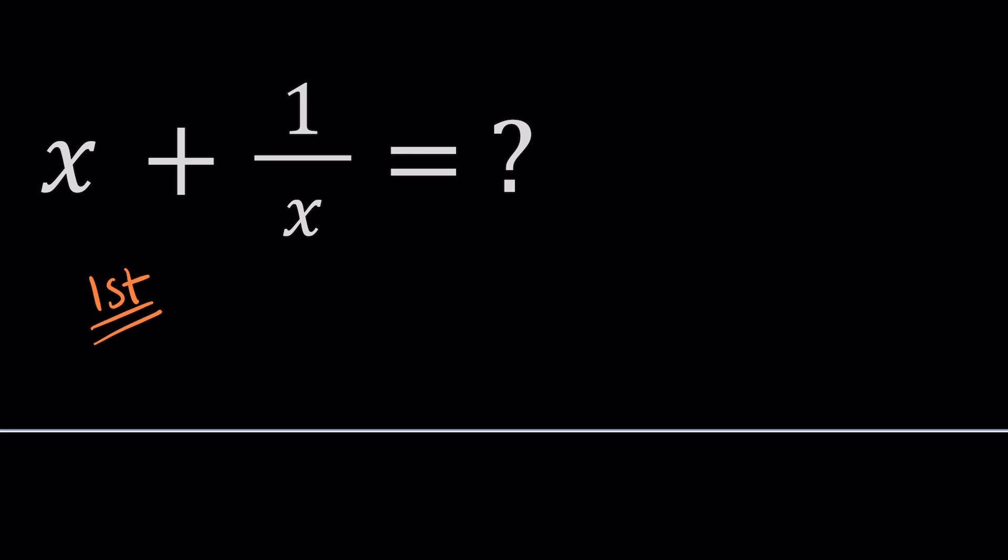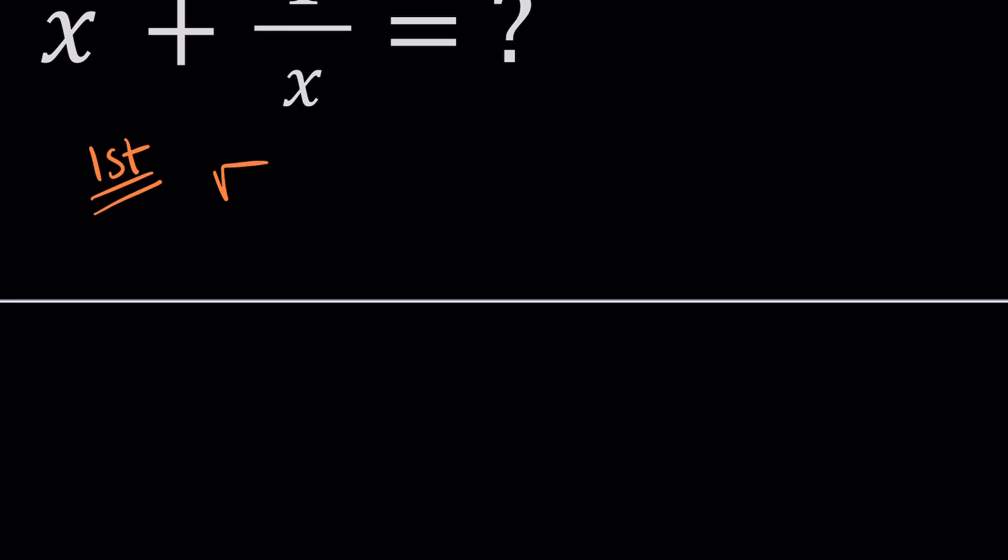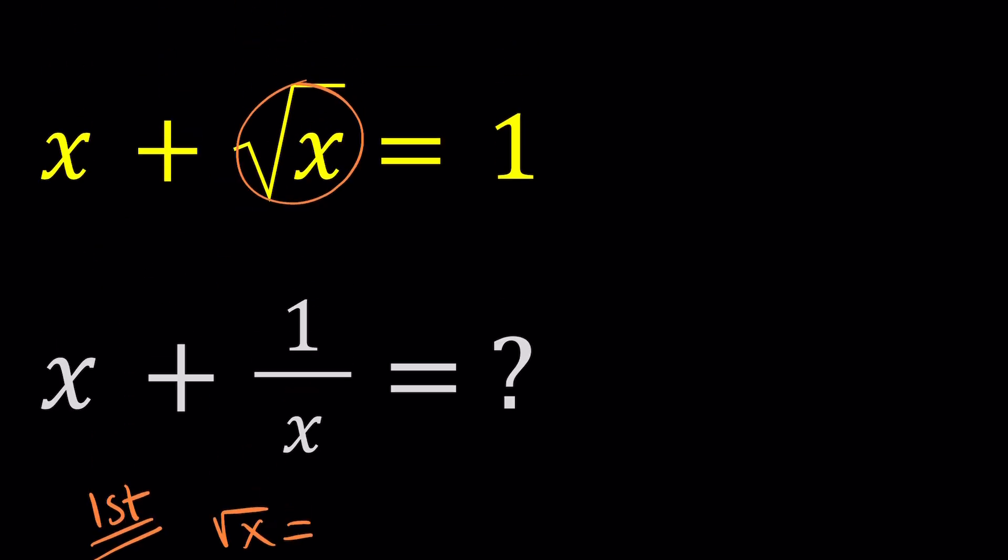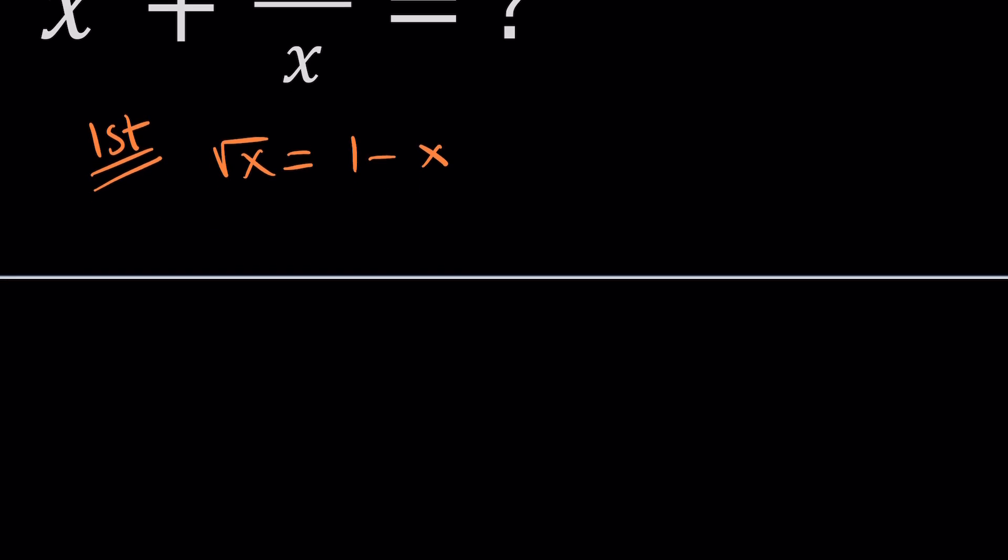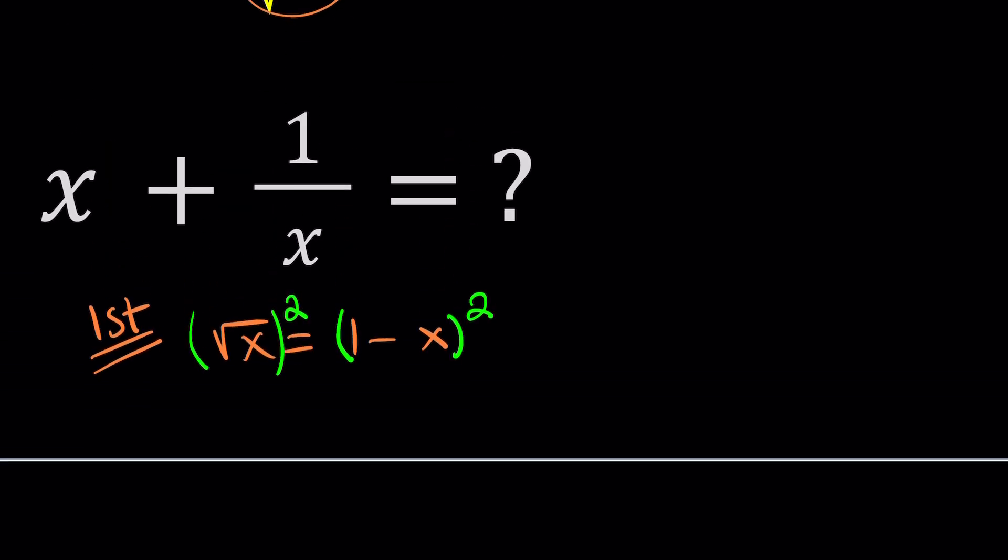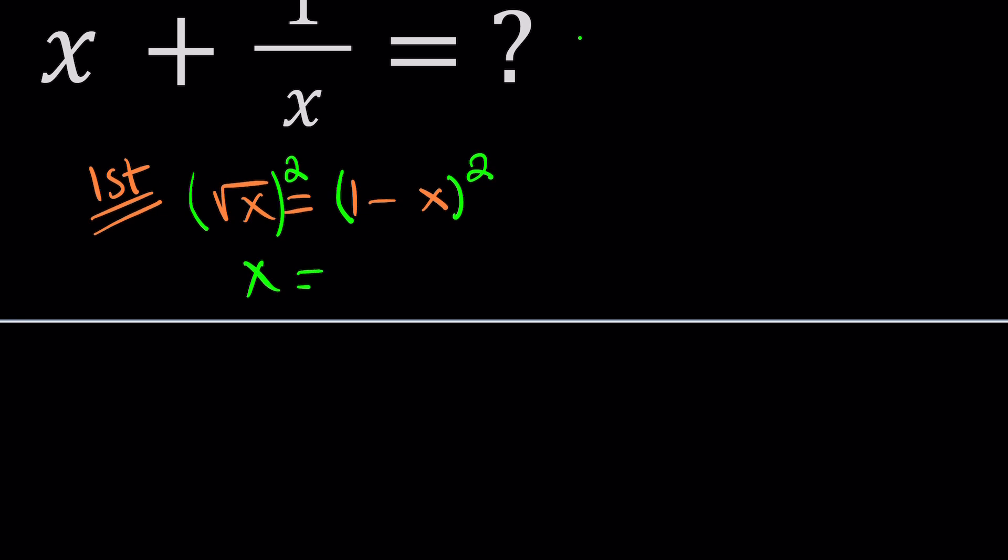Let's start with the first method. My first method involves isolating the radical, and you don't have to do it that way. But if you isolate square root of x from here, you're going to get 1 minus x. Why is it important? Because we're going to square both sides. When we do, we get rid of the radical. If you square this, you get x. If you square that, it's 1 plus x squared minus 2x.